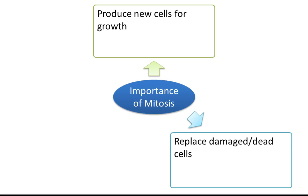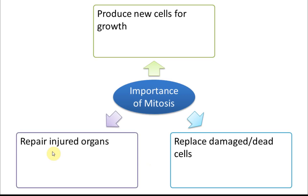Mitosis is also the process to replace damaged or dead cells, and to repair injured organs. When an organ is injured, some of the cells have died, so we need a process to produce new cells. All of these are produced through the process called mitosis.